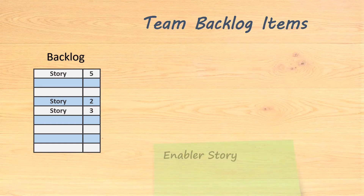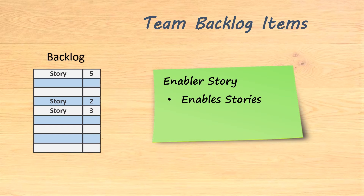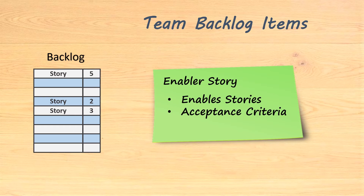The second type of item I am recommending is the enabler story. This is a very important element because, just like the story, it also contributes to the implementation of the solution. However, the perspective of this type of item is more about enabling the implementation of the stories. Examples include the implementation of architectural components and interfaces, the setup of a testing framework, running scripts, etc. Because the enabler stories are not business-oriented, they don't need to follow the 3C structure. However, just like their business brother stories, they must include acceptance criteria and should also be estimated in story points.